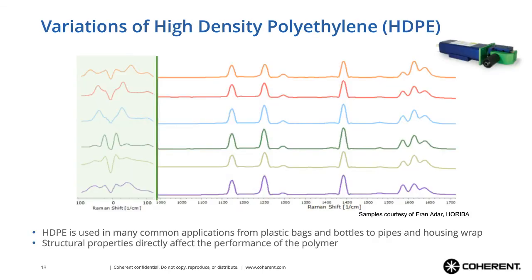Another example is polymer materials. Polymers are very important for understanding their structural properties because these directly affect performance. High-density polyethylene, for example, is used in many common applications from plastic bags to bottles, pipes, and housing wrap. Looking at different examples with different lamellar structures, the chemical fingerprint region looks almost identical, but the low-frequency range looks completely different — making terahertz Raman ideal for understanding the physical properties of polymers and how they could be used in different applications.